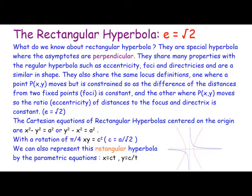The eccentricity for rectangular hyperbolas is e equals root 2. The rectangular aspect means that the asymptotes are perpendicular, so this is really a special case of the hyperbola.